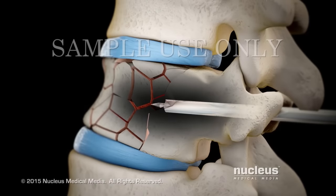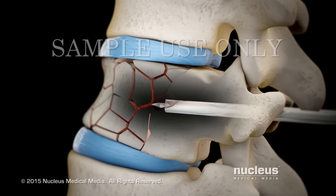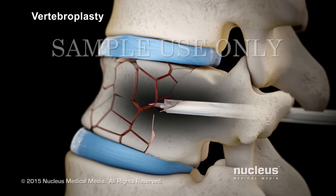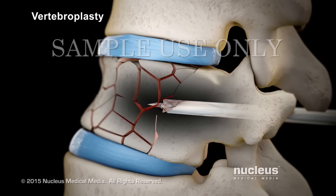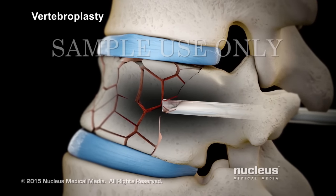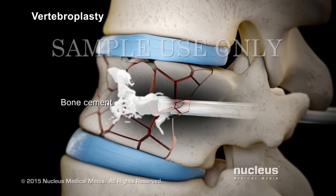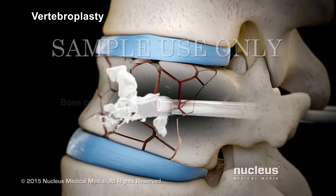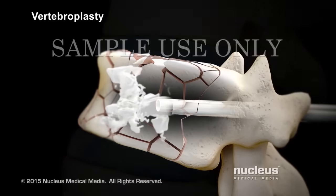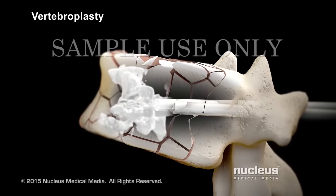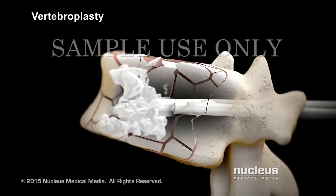If you are having a vertebroplasty procedure, your doctor will remove the trocar and then inject bone cement through each cannula to harden and stabilize your fractured vertebral body.